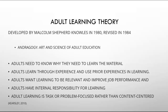The main tenets of adult learning theory include: adults need to know why they need to learn the material they are learning; adults learn through experience and use prior experiences in their learning; adults want their learning to be relevant to their job and improve their job performance; adults have an internal responsibility for learning versus external motivators; and adult learning is task- or problem-focused rather than content-centered.